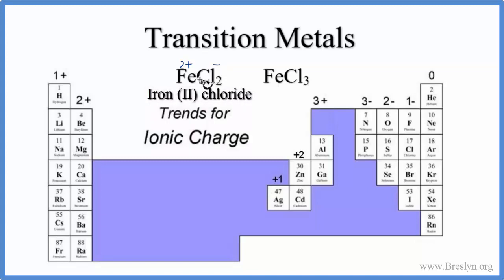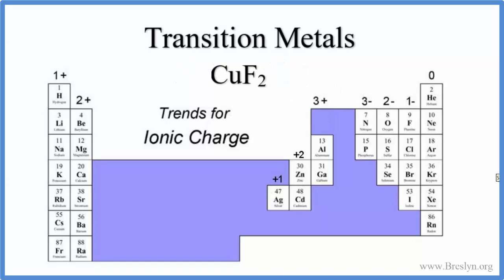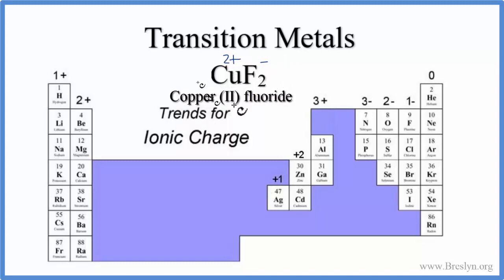That's called iron(II) chloride because of the charge. For FeCl3, chlorine again has a 1- charge, and we have three of them, so the iron must be 3+. We call this iron(III) chloride. For CuF2, fluorine is a halogen in group 17 with a 1- charge. With two fluorines, the total charge is 2-, so the copper must be 2+, making this copper(II) fluoride. The overall compound is neutral because all charges add up to zero, but each individual ion has its charge, and those opposite charges attract to form an ionic bond.